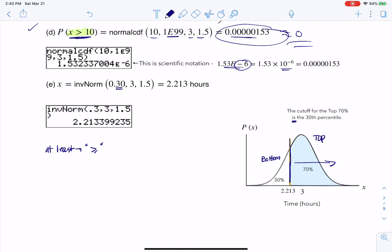So I'm putting in my inverse norm of 30% there, mean, standard deviation, tack on some units, and we're good to go. All right. Thanks so much, everyone. Bye.